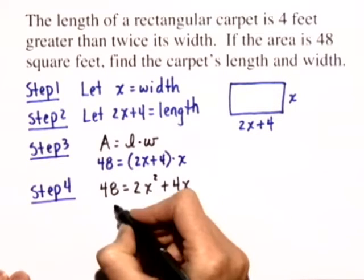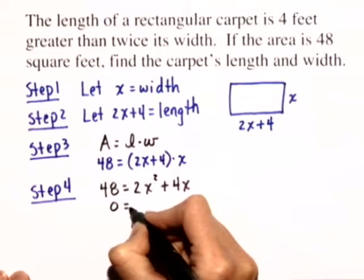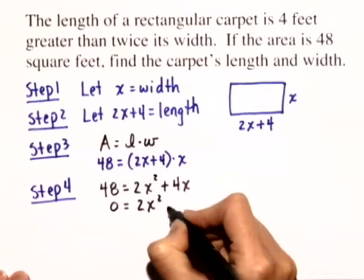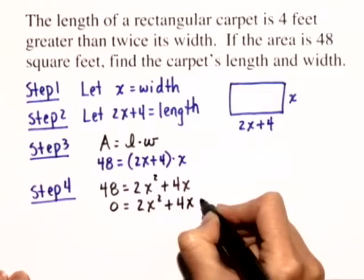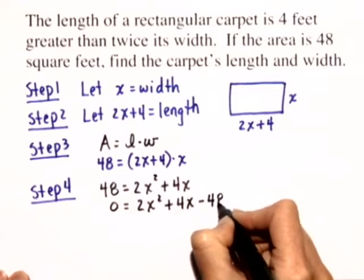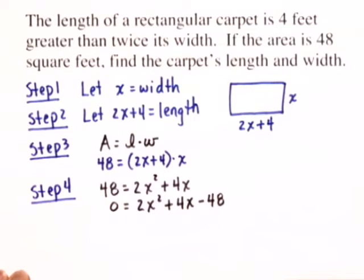Let's subtract 48 from both sides and we'll get 0 equals 2x squared plus 4x minus 48. Now we can factor this equation as it is, or we can notice that each term on the right hand side is even.